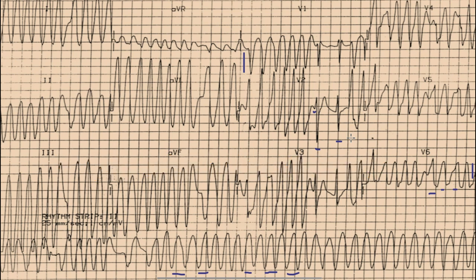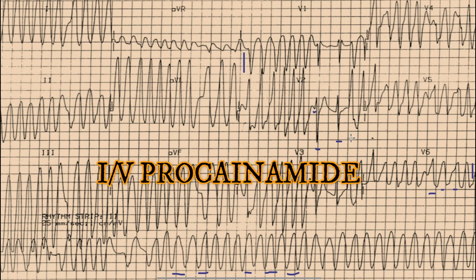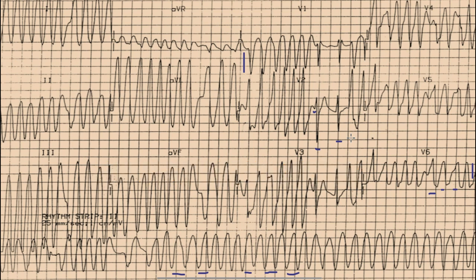In a stable patient, we first try procainamide if available. But if the patient does not respond to IV procainamide, we go for DC shock even if the patient is vitally stable. This is all for today — hopefully you liked the video. For more videos, kindly subscribe to our channel and stay tuned. Allah Hafiz till next time.